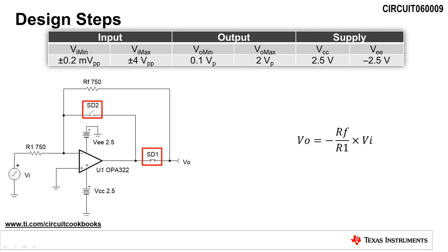Setting RF equal to R1 produces a gain of minus 1 volt per volt. For this circuit, we will select standard 750 ohm resistors for RF and R1.